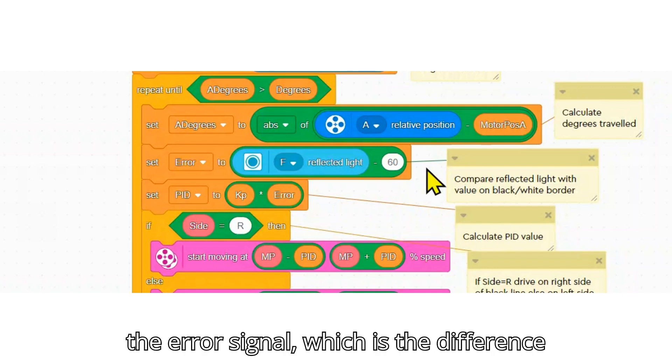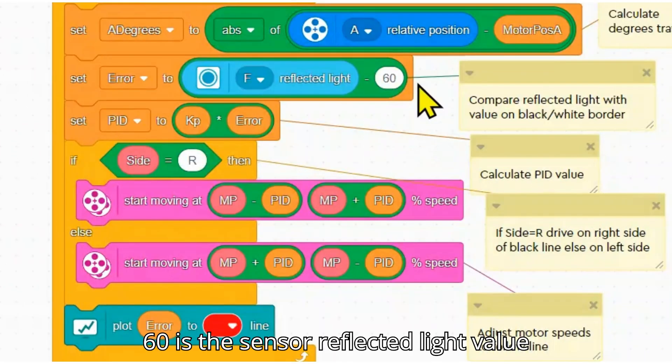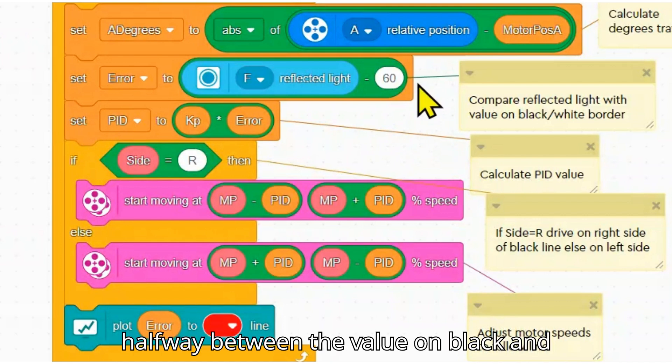To start with we need to form the error signal which is the difference between the reflected light and the set point of 60. 60 is the sensor reflected light value halfway between the value on black and the value on white.